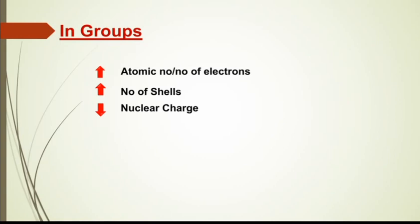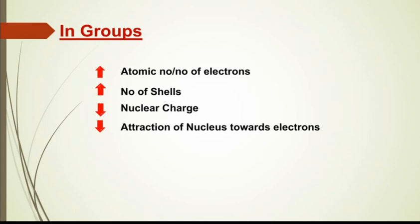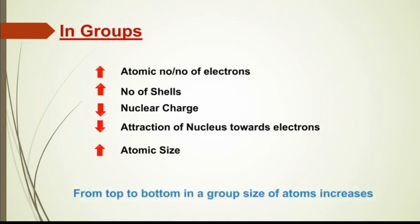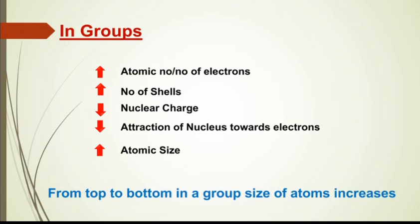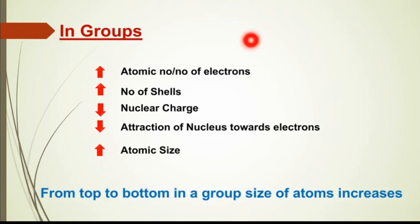अब number of shells जब increase होते हैं, तो center में जो nucleus है, उसका charge होता है - वो अगर हम compare करें size के साथ तो वो charge कम होता है, nuclear charge। और जो nucleus की attraction होती है बाहर वाले shell की तरफ, वो कम हो जाती है, क्योंकि center में अब extra shells present हैं। तो nucleus जो है वो बाहर जो outermost shell में electron है, वहाँ तक उसकी attraction नहीं पहुँच पाती, उसको attract नहीं कर पाता। Attraction of nucleus towards electron decreases, and atomic size increases। Conclusion: from top to bottom in a group, size of atoms increases - और इसकी reason यह above-mentioned points हैं।